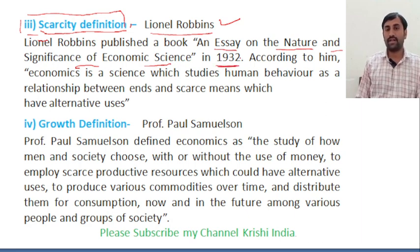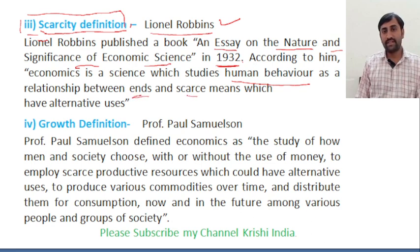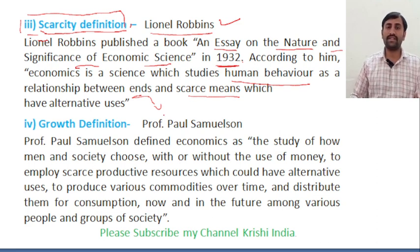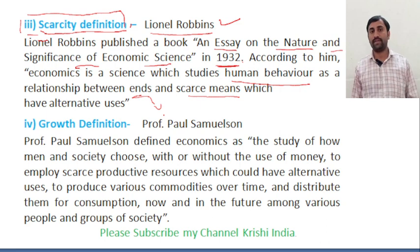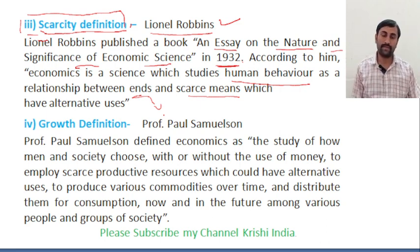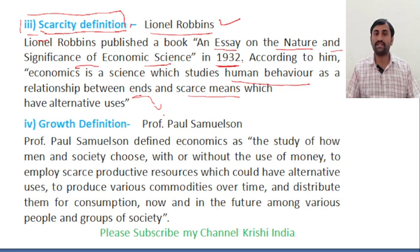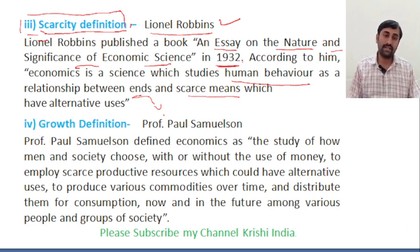The third definition is the scarcity definition, given by Lionel Robbins in 1932. According to Robbins, economics is the science which studies human behavior as a relationship between ends and scarce means which have alternative uses.